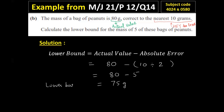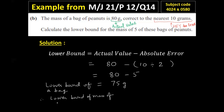But in this question you have to find the mass of five of these bags. So the lower bound of the mass of five bags will be 75 multiplied by 5 grams, which is 375 grams. This is your final answer.